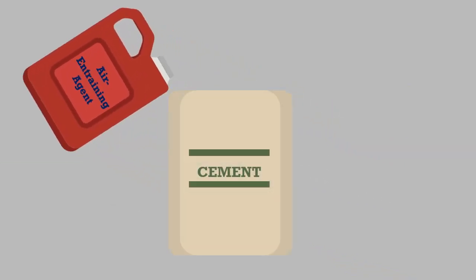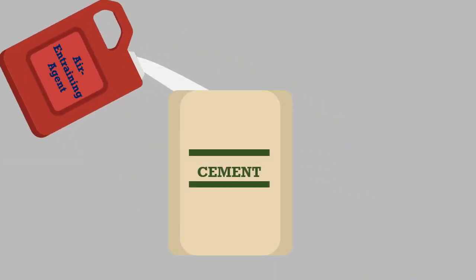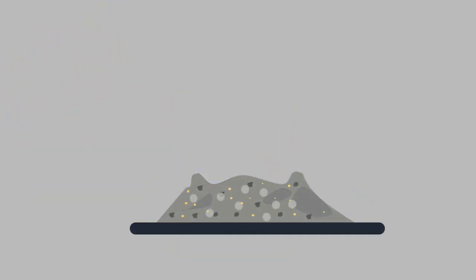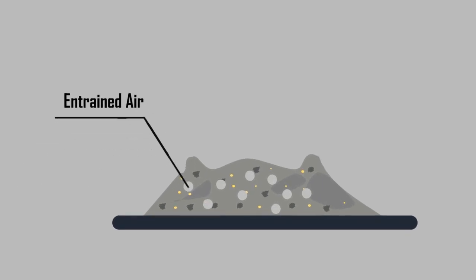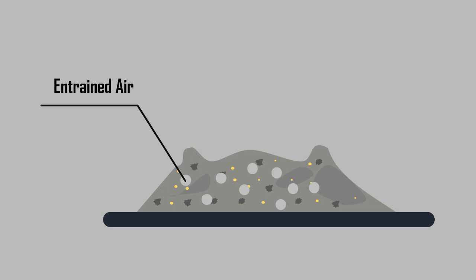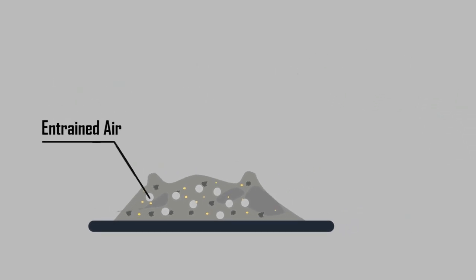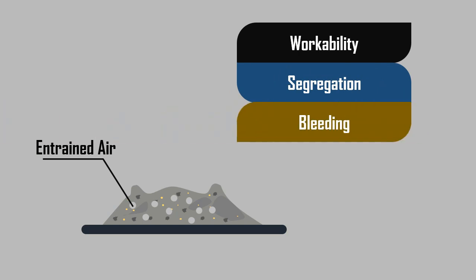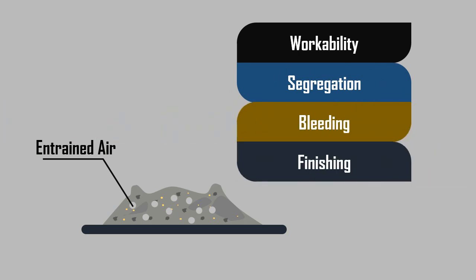Air-entraining admixtures are those added to the cement while manufacturing or during the making of concrete to entrain air in concrete. These air-entraining agents integrate millions of non-coalescing air bubbles, which act as flexible bearings and modify the properties of plastic concrete such as workability, segregation, bleeding, and finishing quality of concrete.